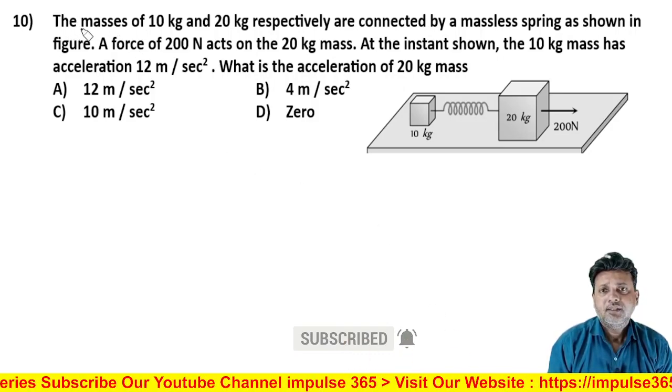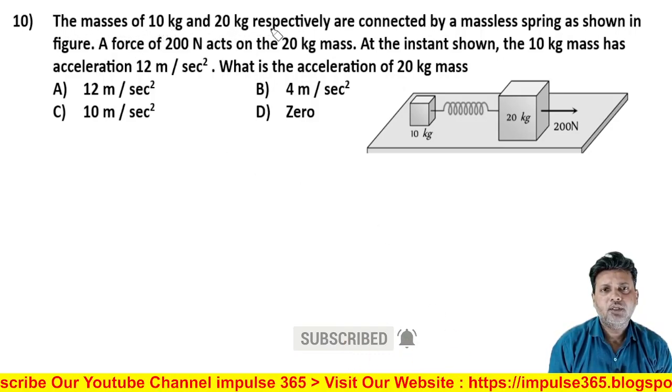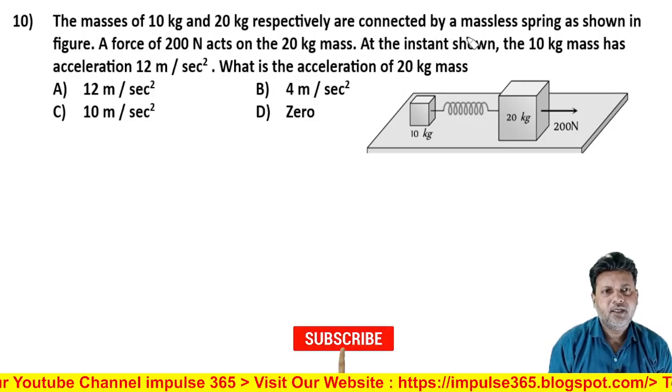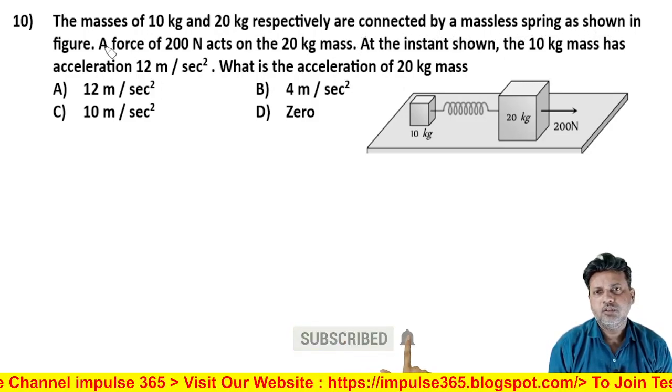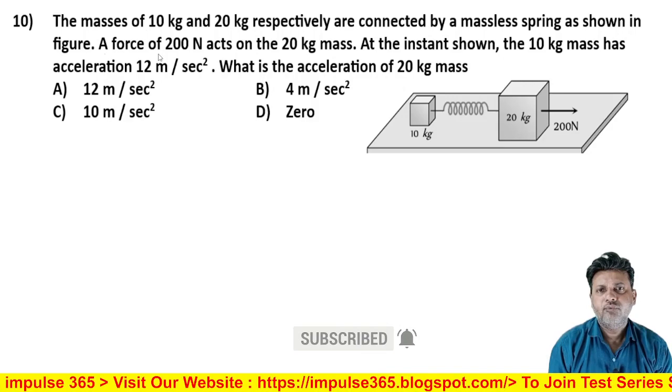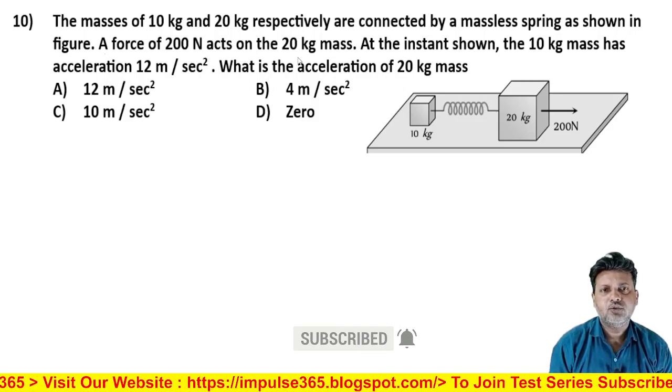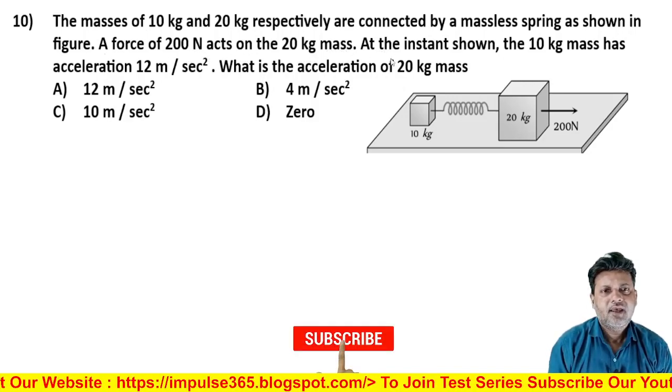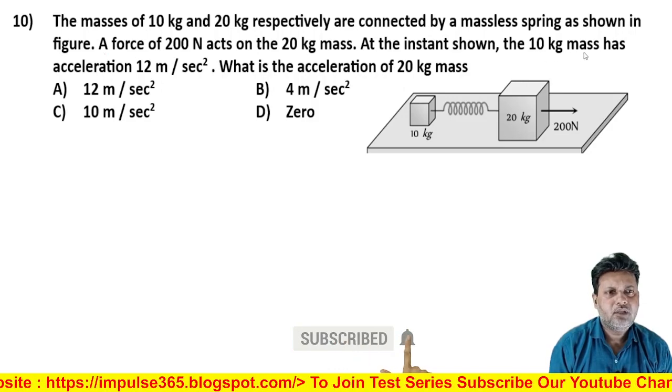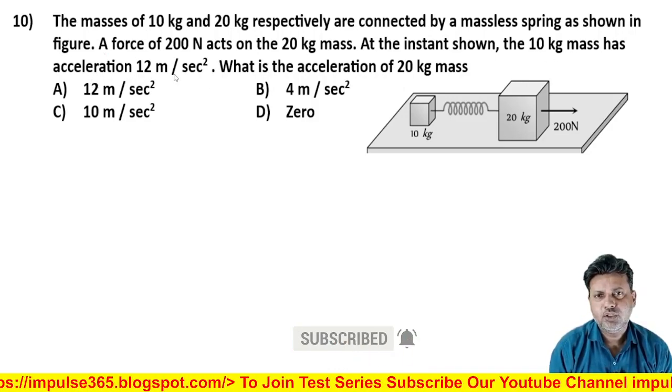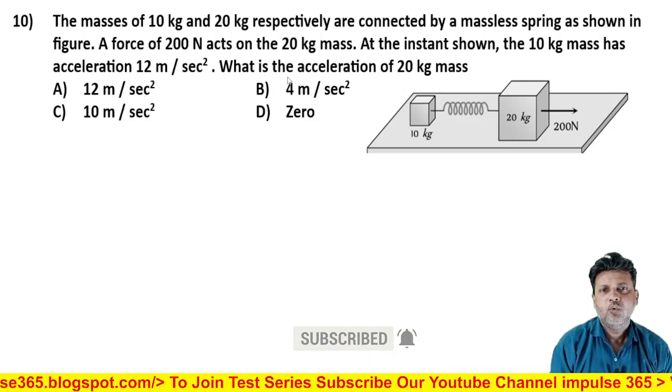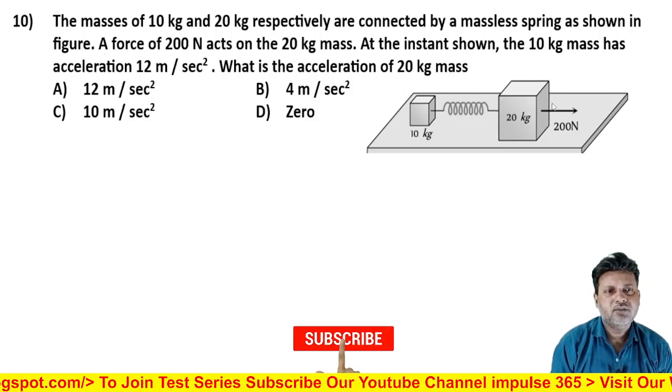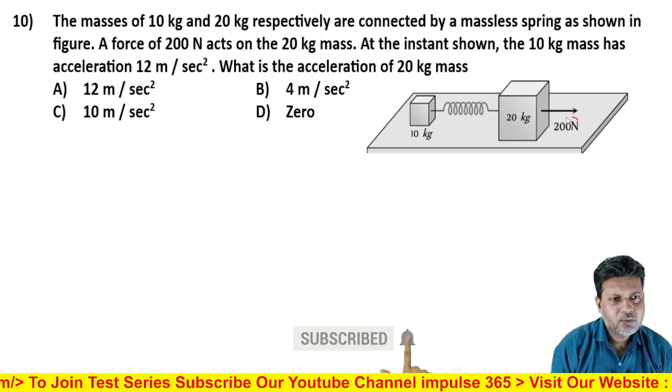The masses of 10 kilogram and 20 kilogram respectively are connected by a massless spring as shown in the figure. A force of 200 newton acts on 20 kilogram mass. At the instant shown, the 10 kilogram mass has acceleration 12 meter per second square. What is the acceleration of 20 kilogram mass?